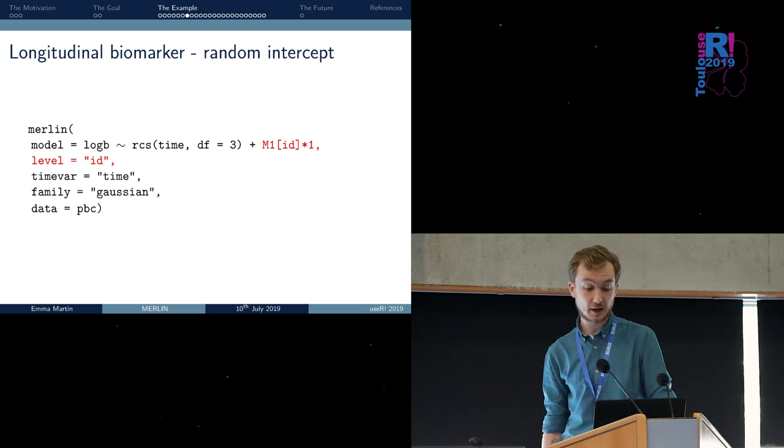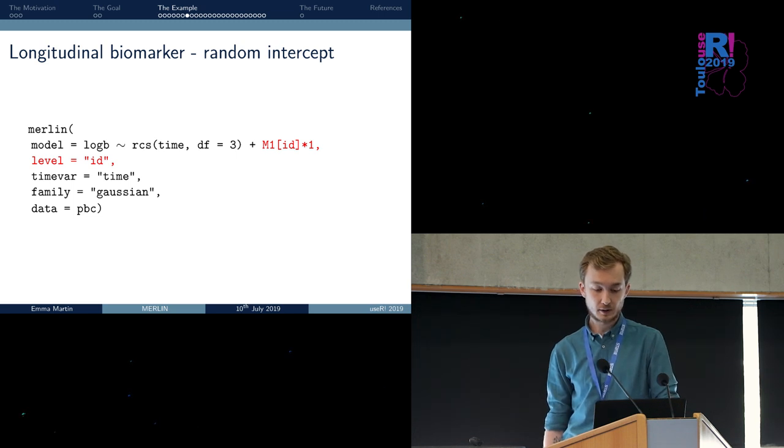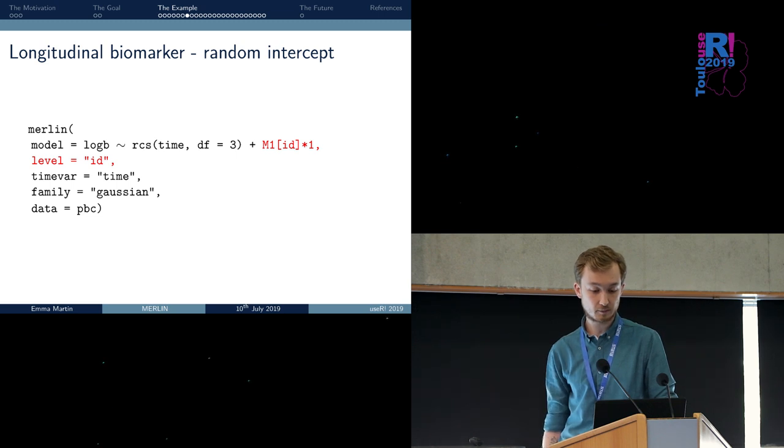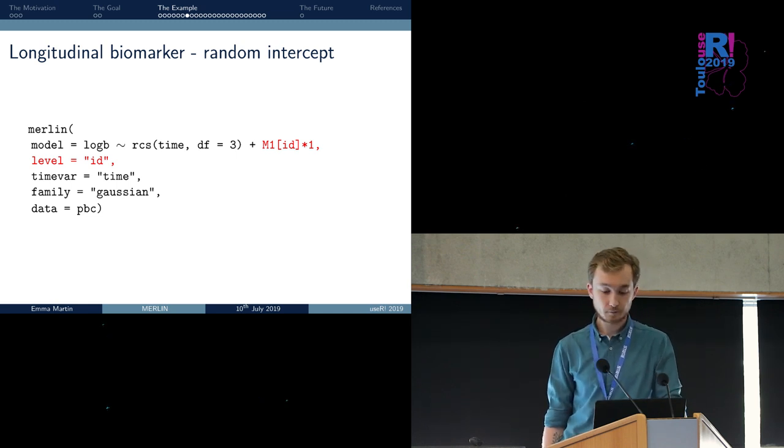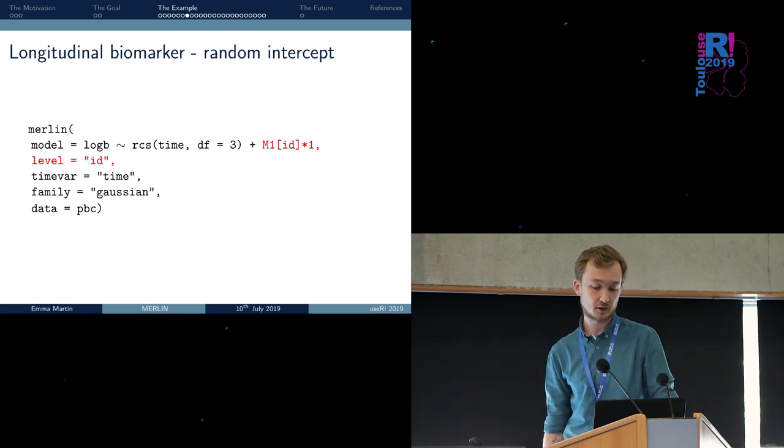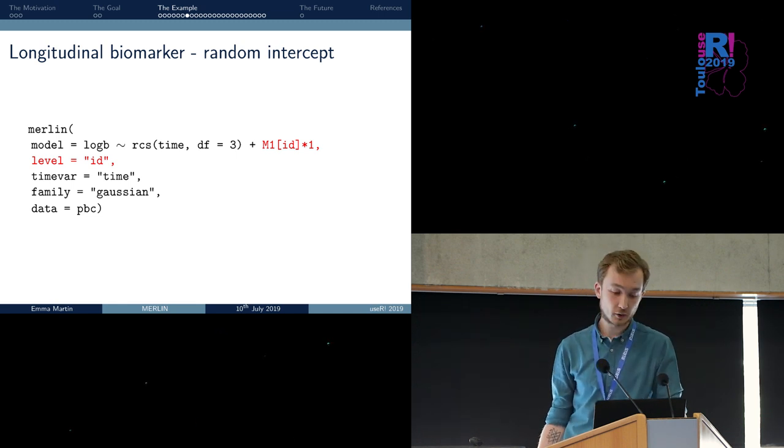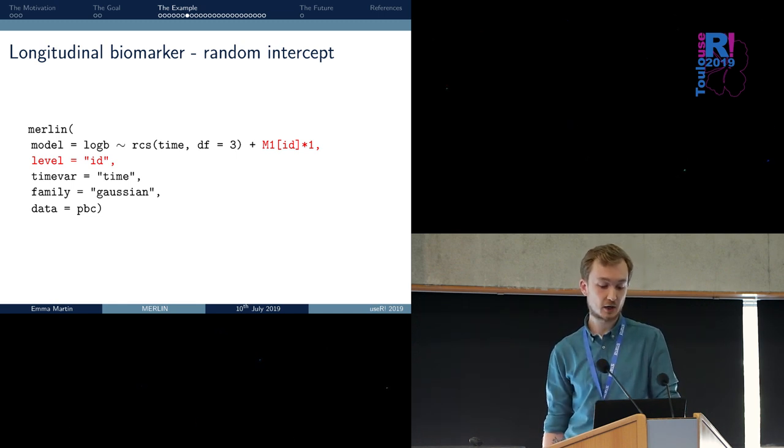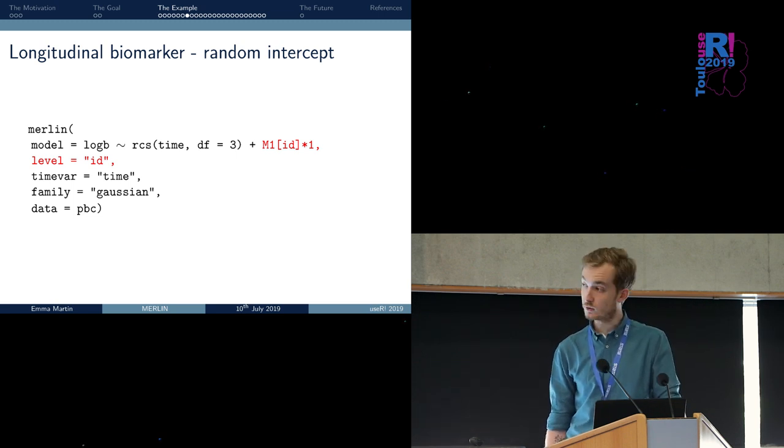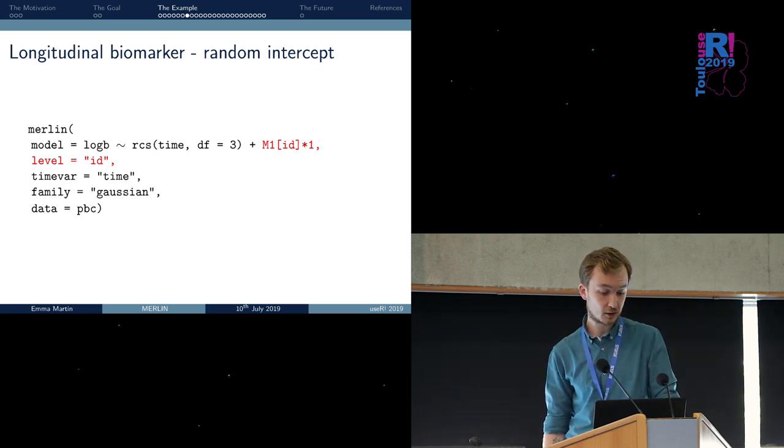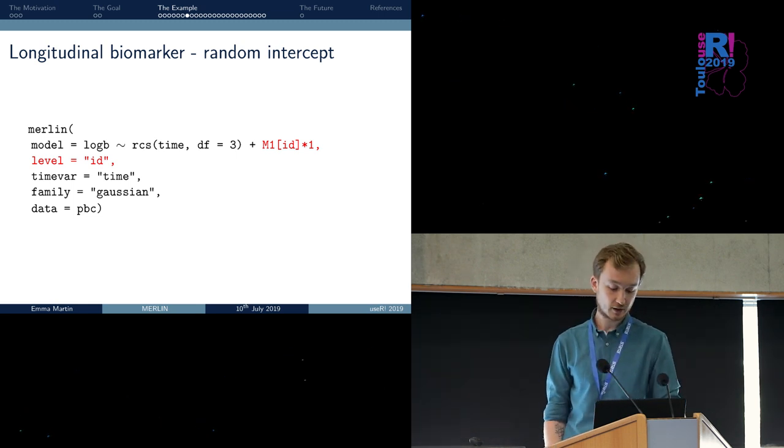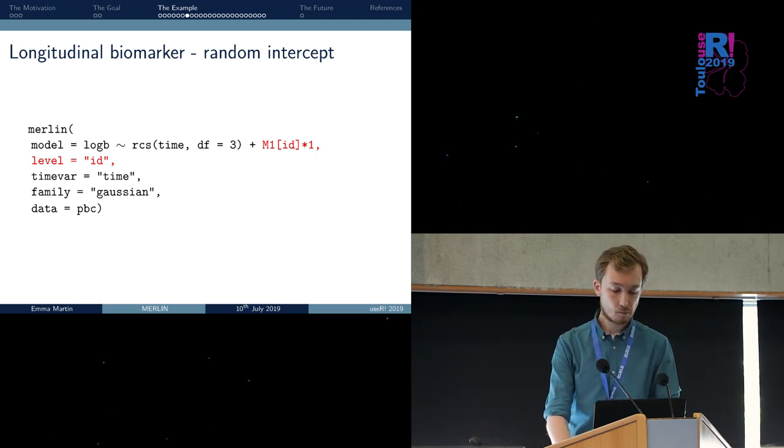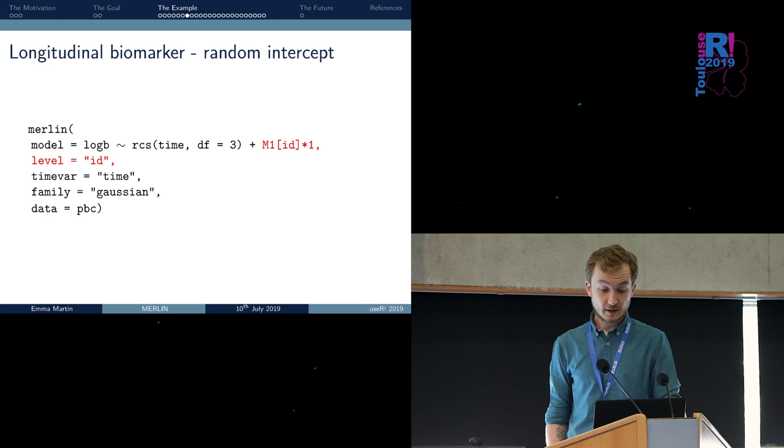We can also include a random intercept and turn this model into a mixed-effects model. Mixed-effects are defined by capital M followed by a number. Between square brackets, we need to include the variable that identifies the level at which we assume this random effect is placed. We use the notation star one to constrain the coefficient associated to the random effect to one. Here we have to define which is the variable that defines the nesting structure, essentially the clustering.